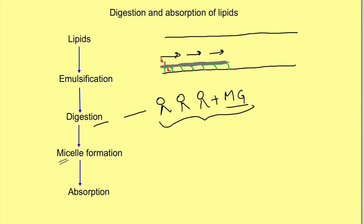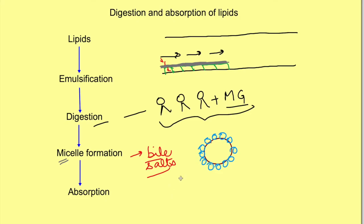Bile salts, which were helpful in emulsification, are also helpful in micelle formation. Because they have a hydrophilic part and a lipophilic part, they carry all the digested products inside and attach on the outside. This forms a very small droplet — in the nanometer range — surrounded by bile salts. Micelles act as carriers and transport the digested products along the unstirred water layer lining the cells. So bile salts help in both emulsification (useful for digestion) and micelle formation (important for absorption).